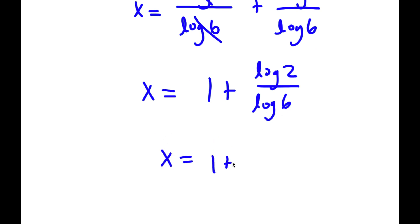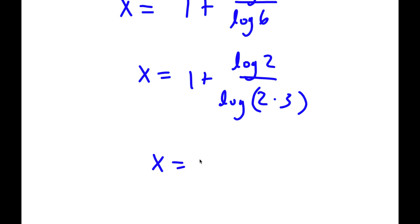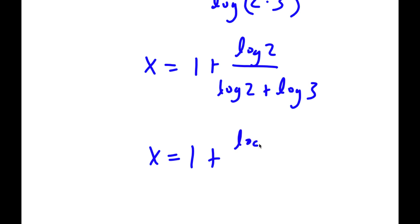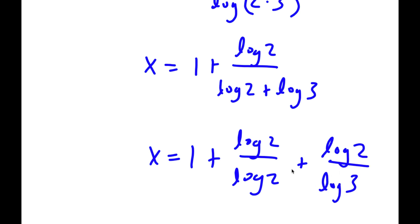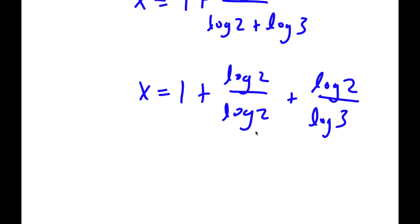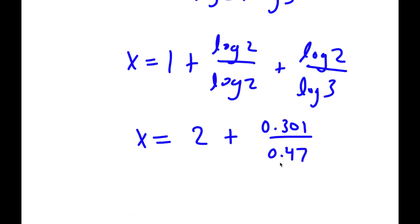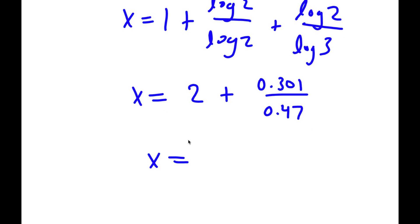And log 6 I can write as log 2 times 3, and I'm going to do the same thing again. I'm going to rewrite this as log 2 over log 2 plus log 3. If I expand it, I get 1 plus log 2 over log 2 plus log 2 over log 3. Log 2 and log 2 cancel out, so I have x is equal to 2 plus log 2 — that's 0.301 — over log 3 — that's 0.47. So if you simplify this, you get x is equal to 1.3868.